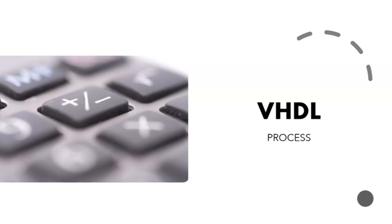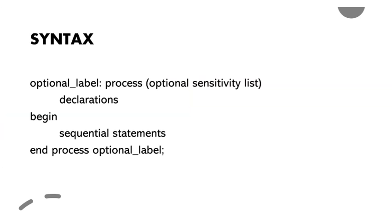Let us see the syntax of the process statement. The syntax is: an optional label, then the keyword 'process', then an optional sensitivity list. The sensitivity list contains the variables or signals on which this process is depending. Based on changes in the sensitivity list, the process is activated. Then there will be some declarations, then 'begin', followed by sequential statements that execute within the process.